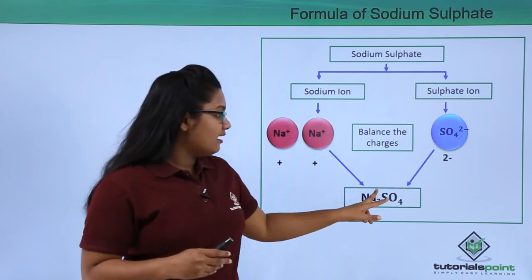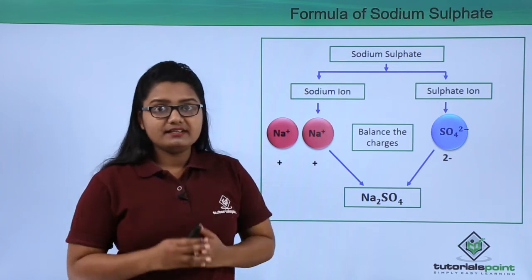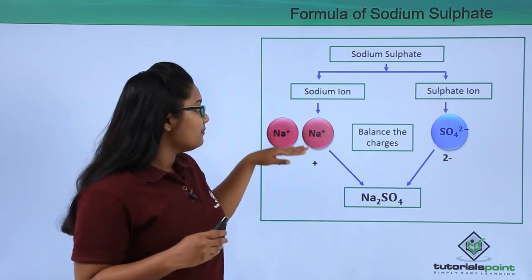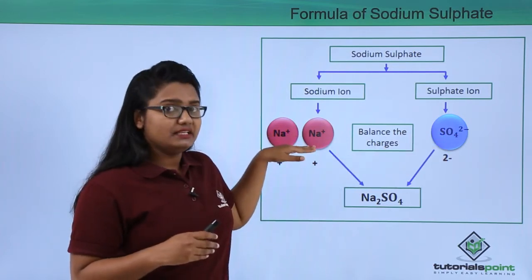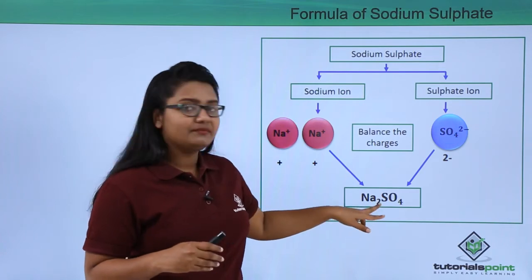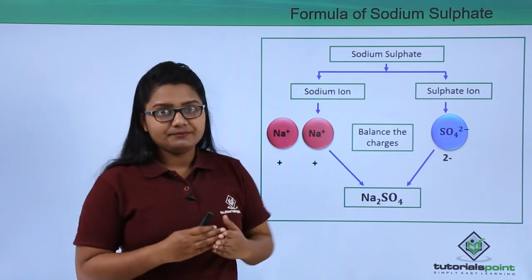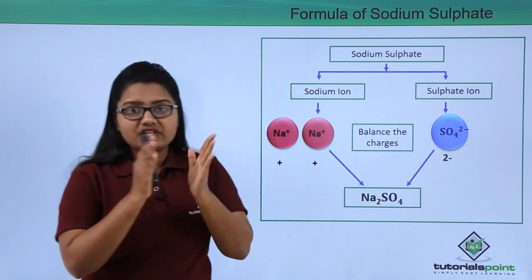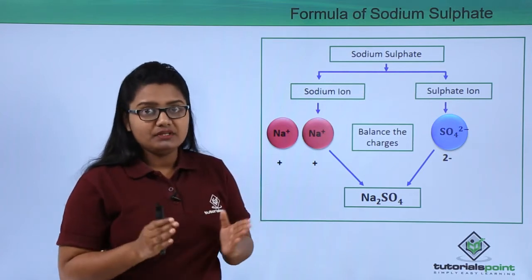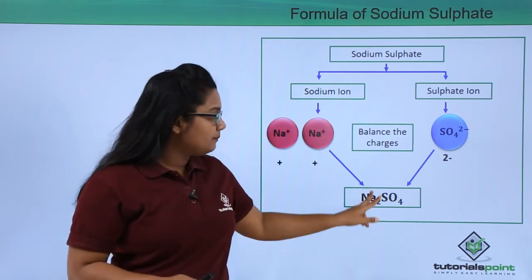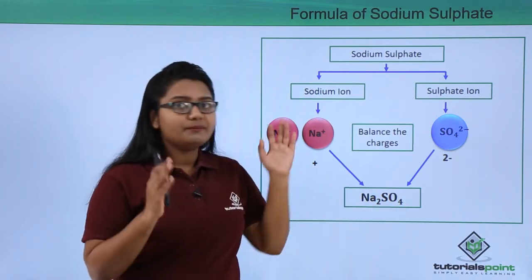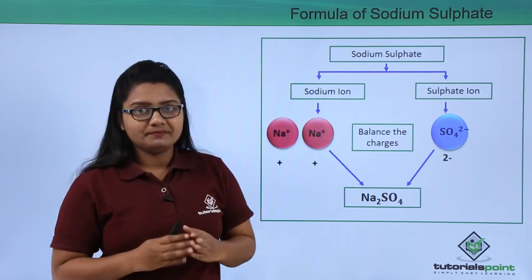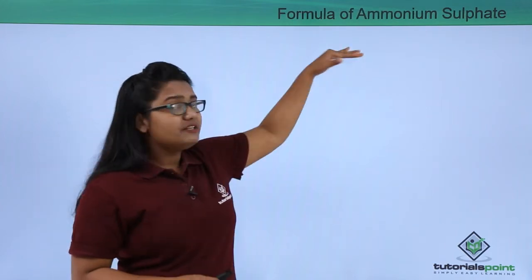In Na₂SO₄, we did not put any parentheses around SO₄ because it appears only once. Sodium appears twice, so we write a subscript 2 after Na. This reinforces the rule: whenever a polyatomic ion occurs more than once in a compound, we put parentheses around it; otherwise we do not.